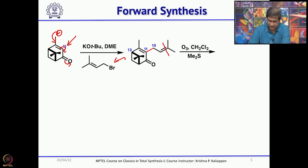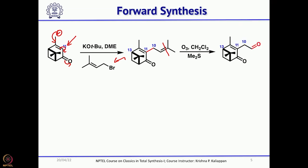Ozonolysis of this gives the corresponding aldehyde. Then comes the key reaction: when you do the photochemical treatment, the 1,3-alkyl shift takes place, and when the 1,3-alkyl shift takes place, the double bond also migrates to the other side. This is one of the key reactions.